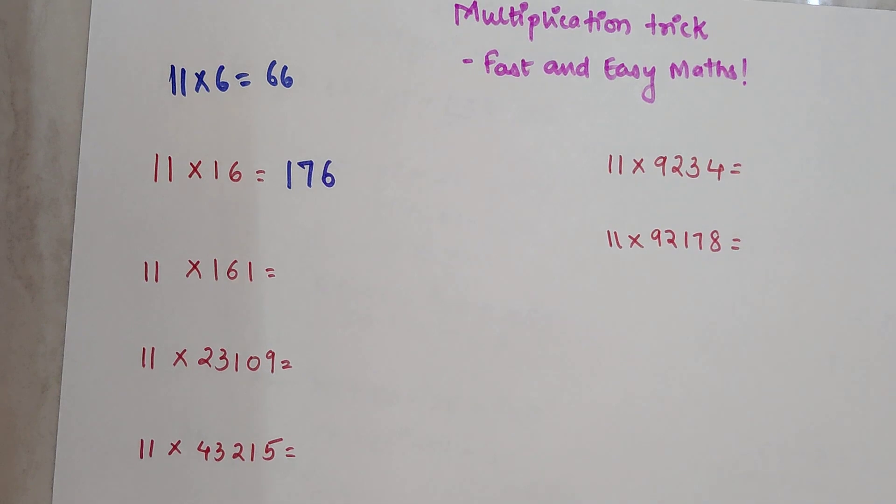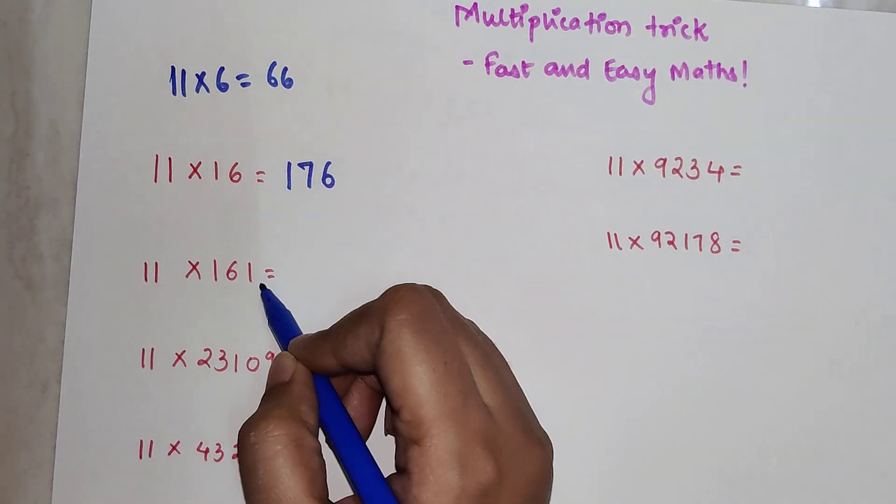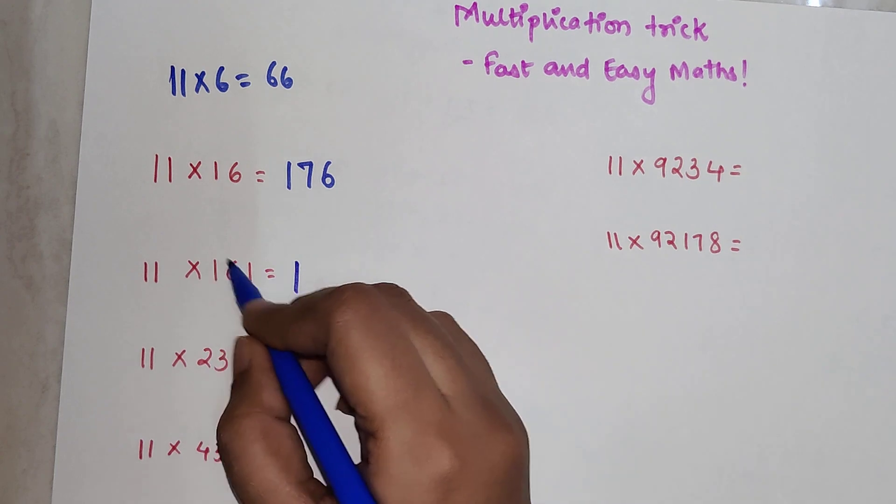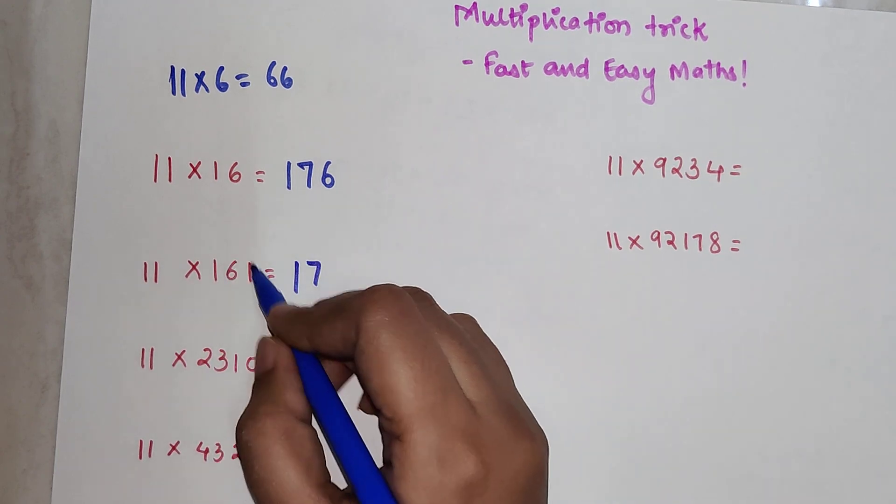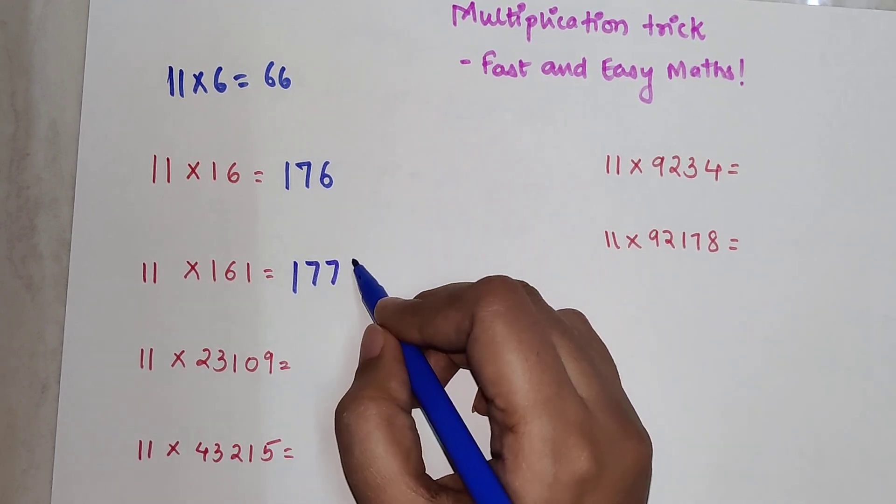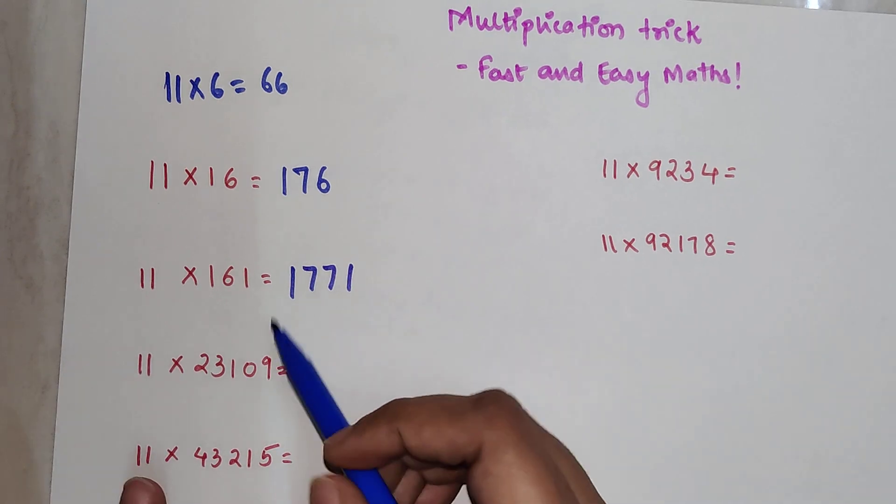For 11 into 161, it should be 1, then 1 plus 6 is 7, again 1 plus 6 is 7, and then 1. So you are understanding, right? As you keep on adding the digits with the next digit.